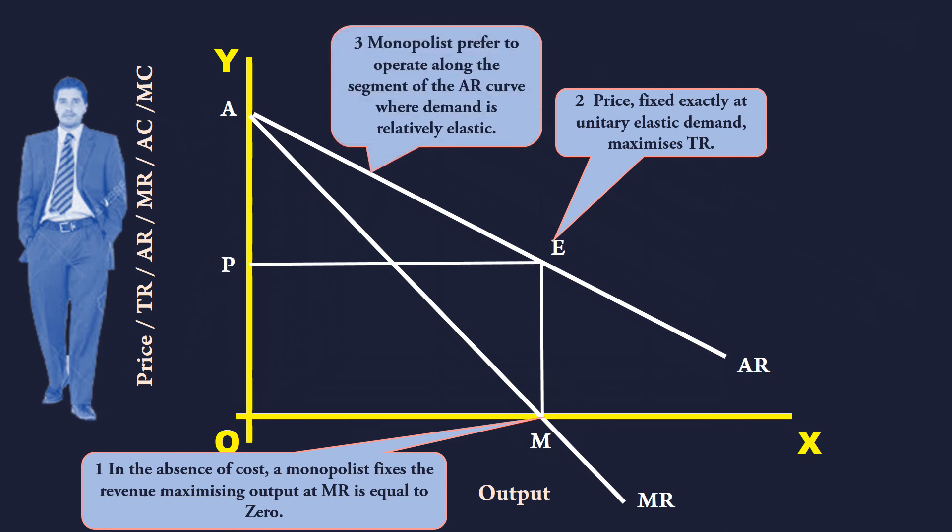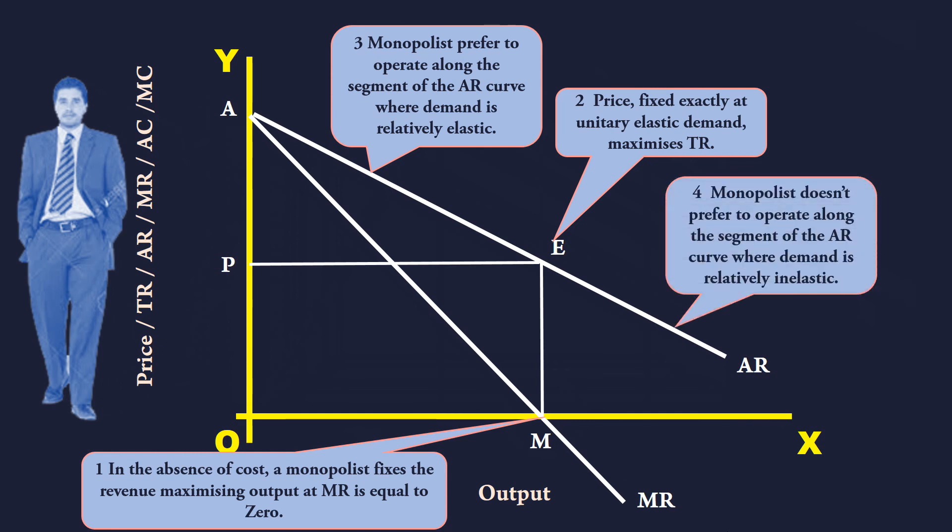3. Monopolists prefer to operate along the segment of the average revenue curve, where demand is relatively elastic. 4. Monopolist doesn't prefer to operate along the segment of the average revenue curve, where demand is relatively inelastic.